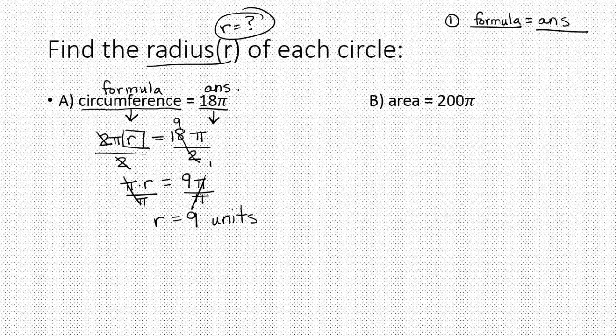Let's try case B. This time we know the area. So we have 200π square units this time, and we're trying to find radius again. So we're going to use step one of my strategy, which is I want to see the formula, which is pi times radius squared, and that is equal to the answer, which is 200π.